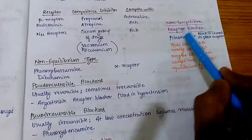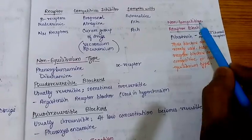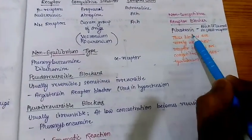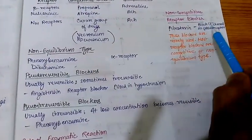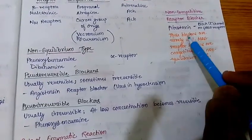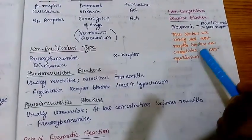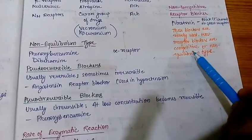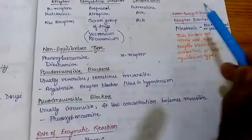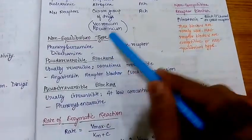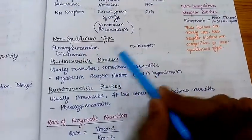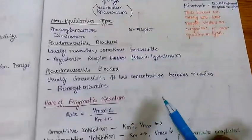One example of a non-competitive receptor blocker — although very less common — is picrotoxin, which blocks the chloride channel on GABA receptors. These blockers are rarely used; most receptor blockers are competitive or non-equilibrium type. For non-equilibrium type, an example is phenoxybenzamine — an alpha receptor blocker.